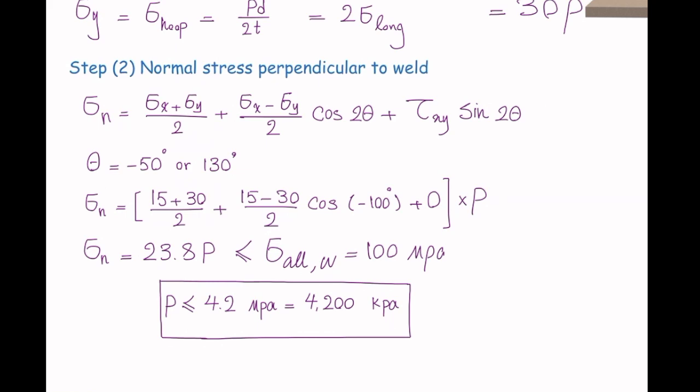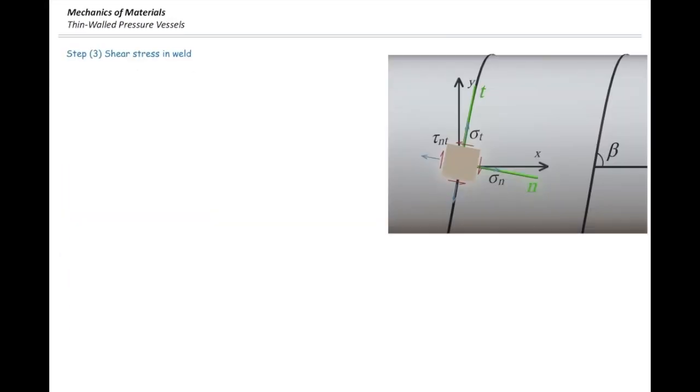Can I move on to the next part? Next part requires us to determine how much is the allowable internal pressure based on the shear stress. We use stress transformation for shear. And that would be negative sigma x minus sigma y over 2 times sine of 2 theta plus tau xy cosine of 2 theta. Now we plug the values with the theta that we used in the previous case. And once we do that and factor out p, we get tau nt is equal to 7.39p. That is the shear stress parallel to the welding. And that should be smaller than the allowable shear stress, which is 25 megapascals. If I solve it for p, we get 3.38 megapascals or 3380 kilopascals.